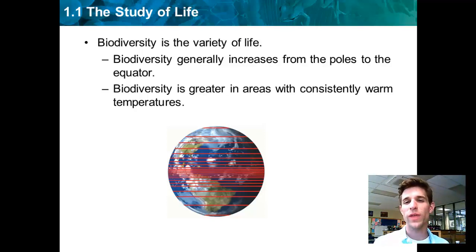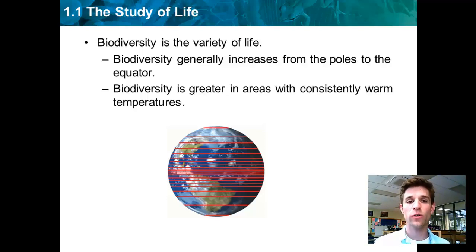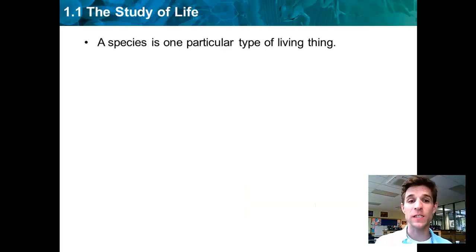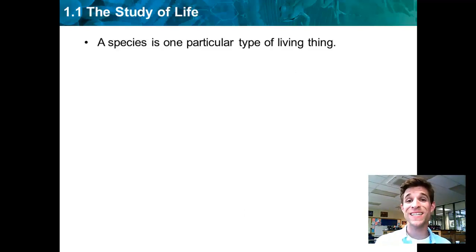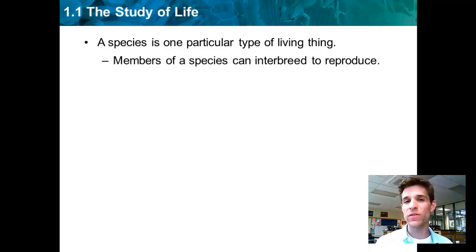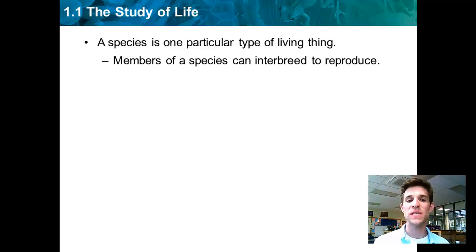There are some places on Earth where that theme doesn't apply, but in general, as you move towards the equator, you're going to find more types of living things. Our next vocabulary term is species. Species is just a type of living thing — the root of that word simply means 'kind.' It's a kind of living thing. But how do you tell one kind of living thing is different from another kind, or a different species?